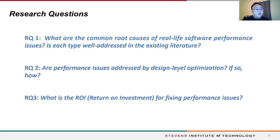Therefore, we are motivated to answer three related questions. First, what are the common root causes of real-life software performance issues? Is each type well addressed in existing literature? Second, are the performance issues addressed by design-level optimization, and if so, how? Third, what is the return on investment for fixing performance issues?